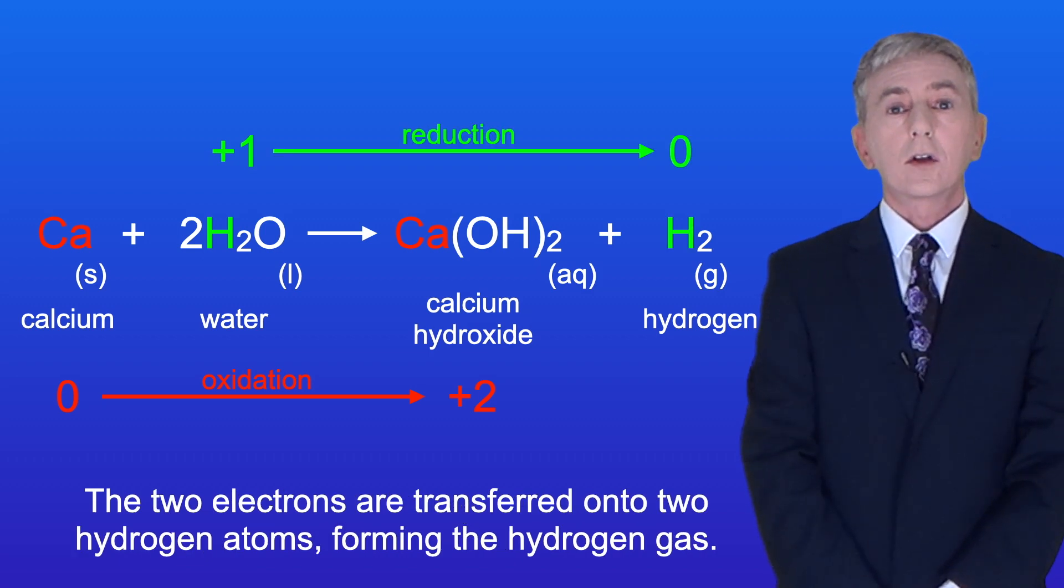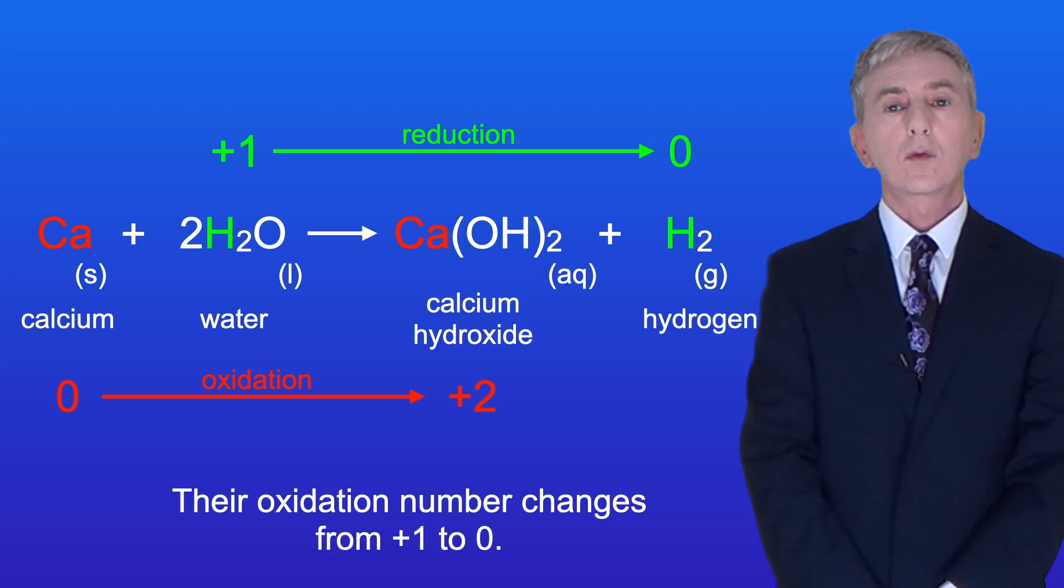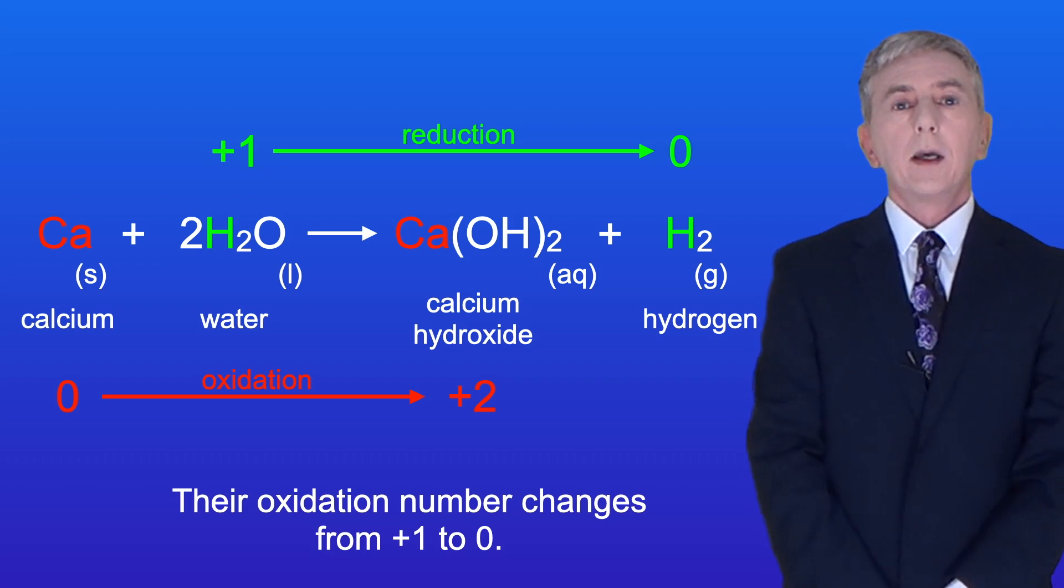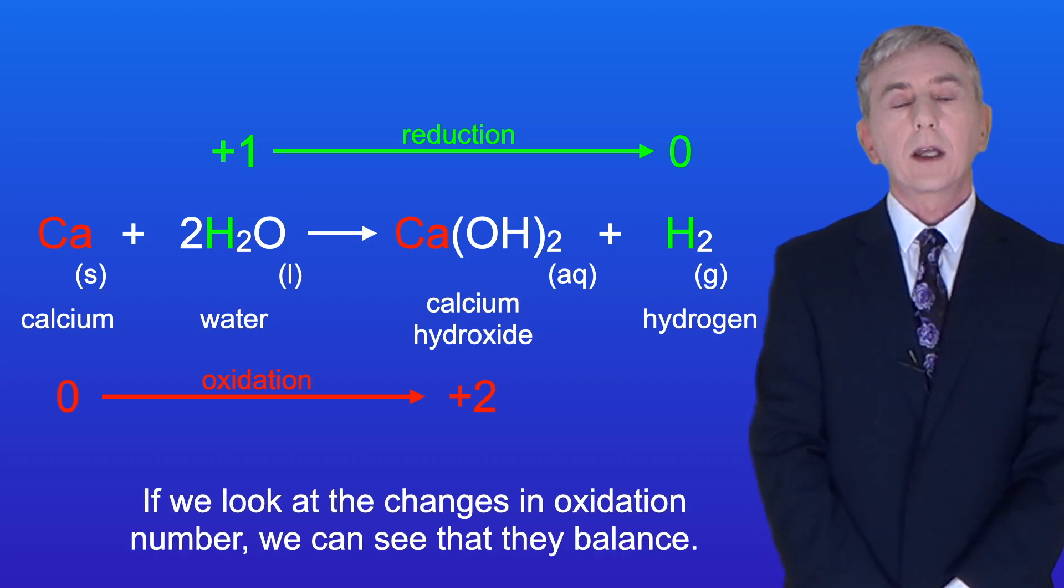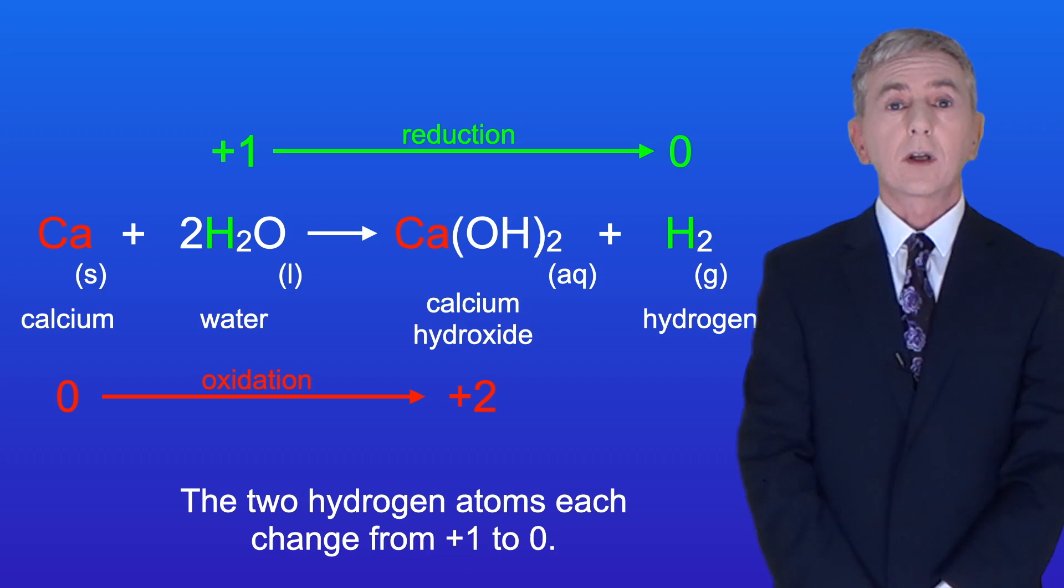The two electrons are transferred onto two hydrogen atoms, forming the hydrogen gas. These two hydrogen atoms are reduced, and their oxidation number changes from plus one to zero. Now if we look at the changes in oxidation number, we can see that they balance. One calcium atom changes from zero to plus two, and the two hydrogen atoms each change from plus one to zero.